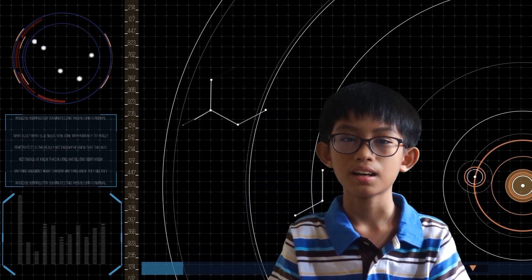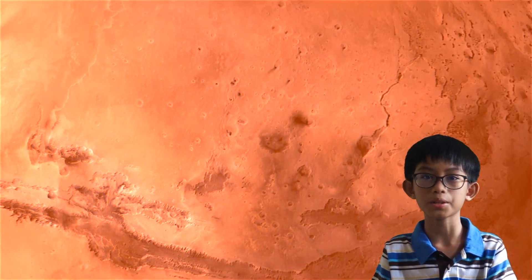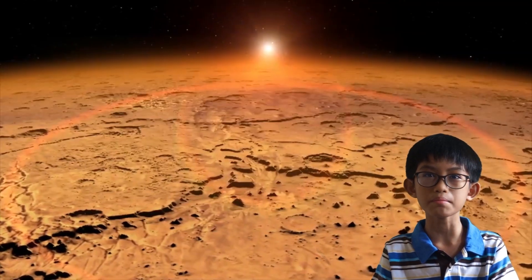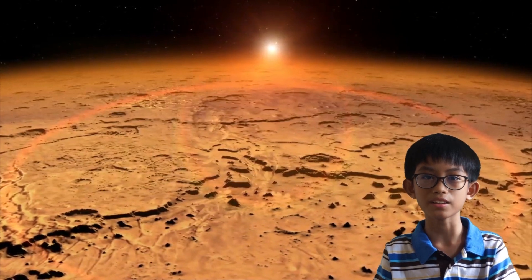The next planet from the Sun is Mars. Mars is a red and rocky world. It has lots of dust storms and volcanoes.